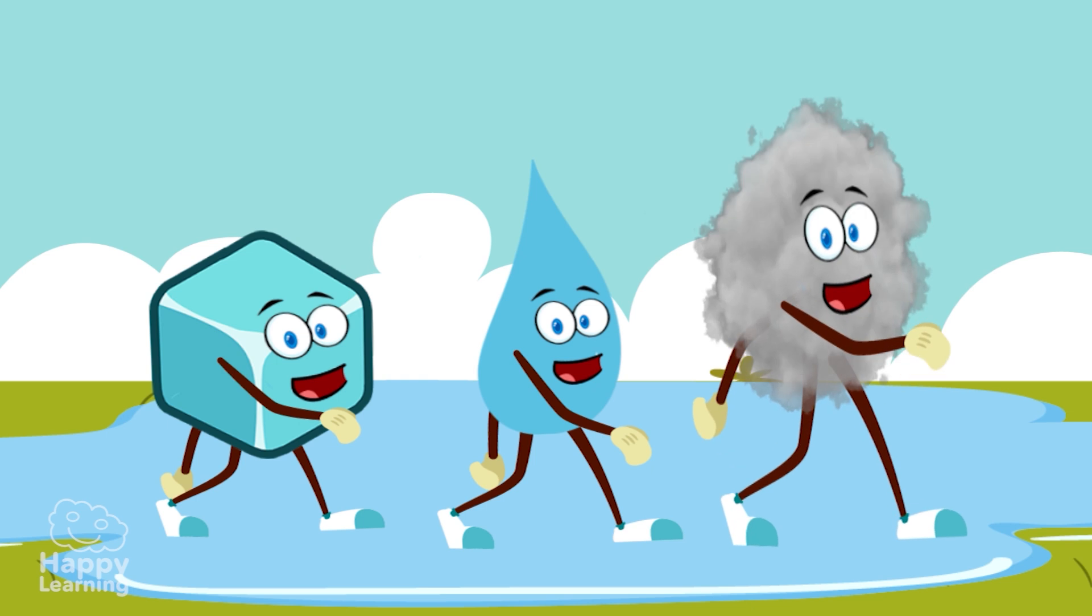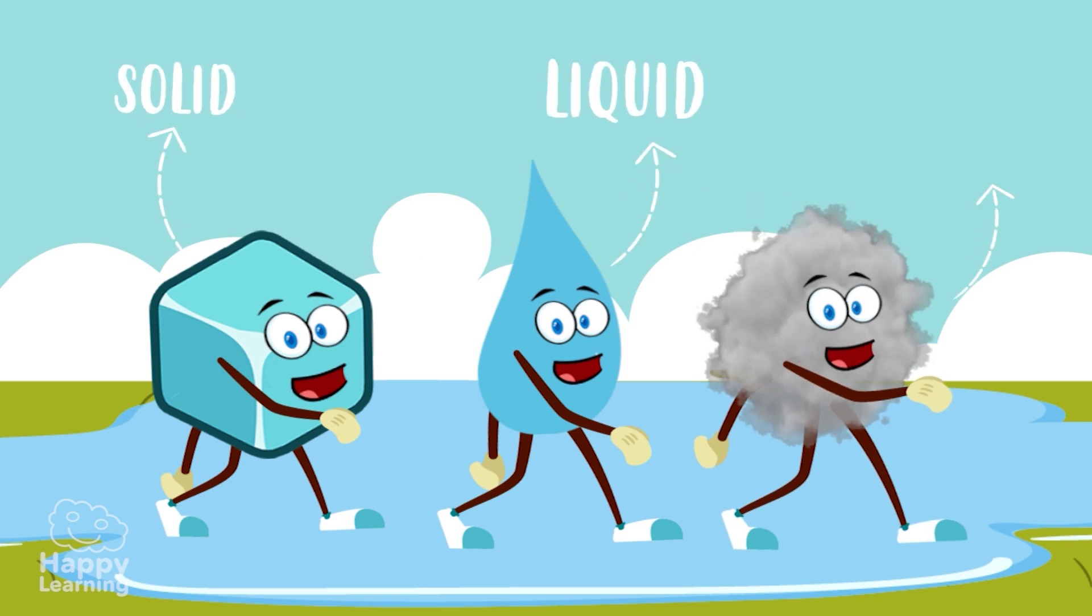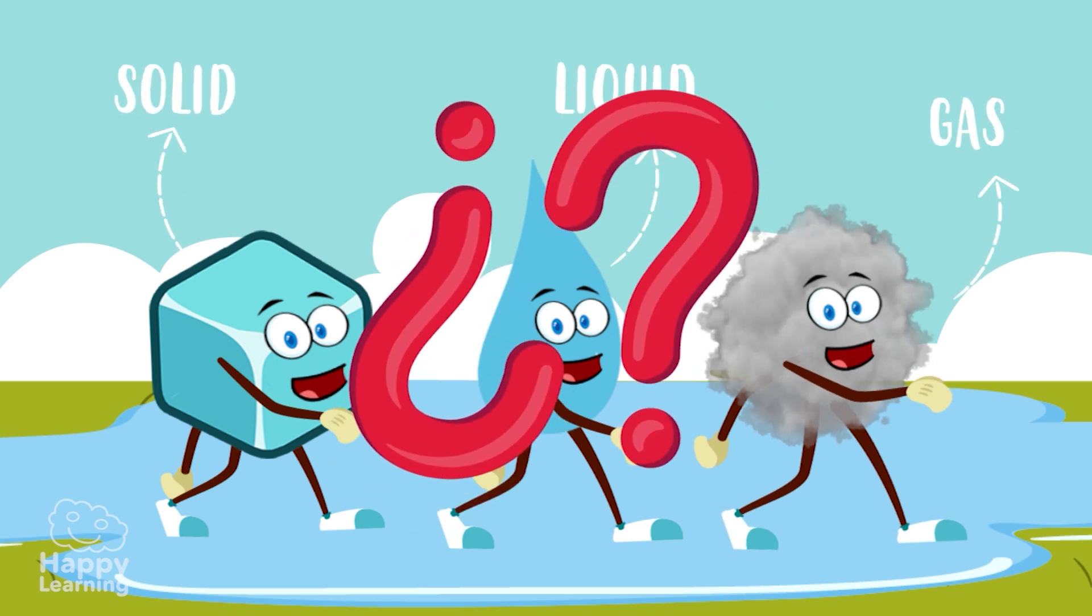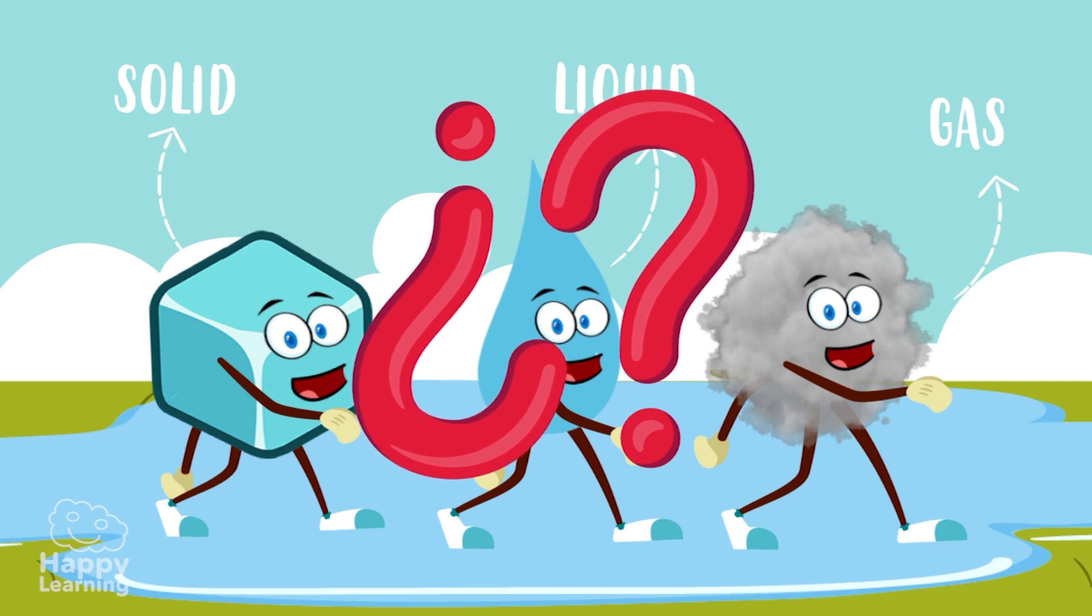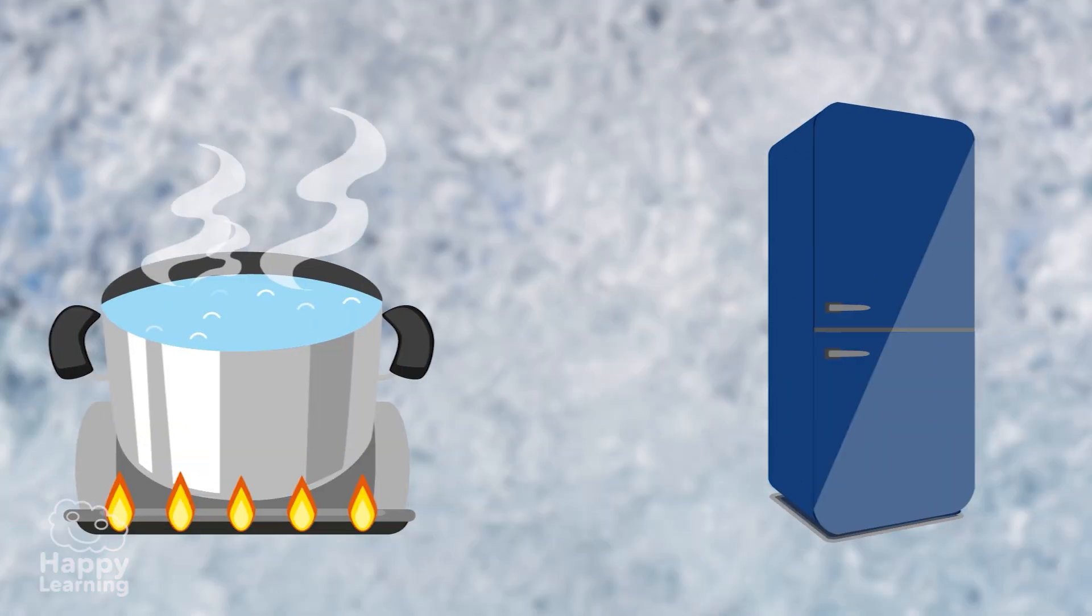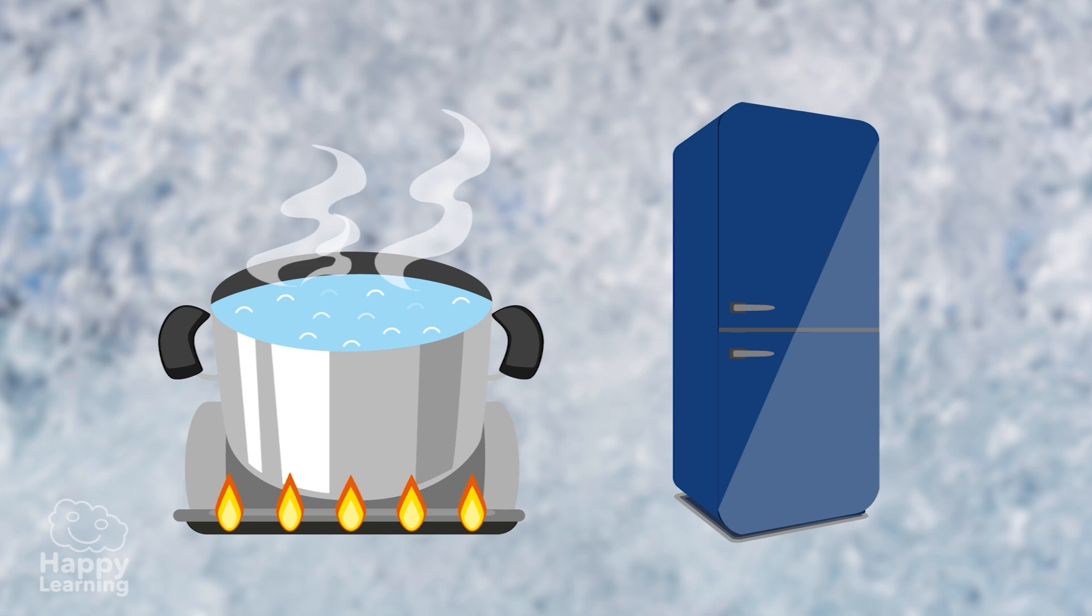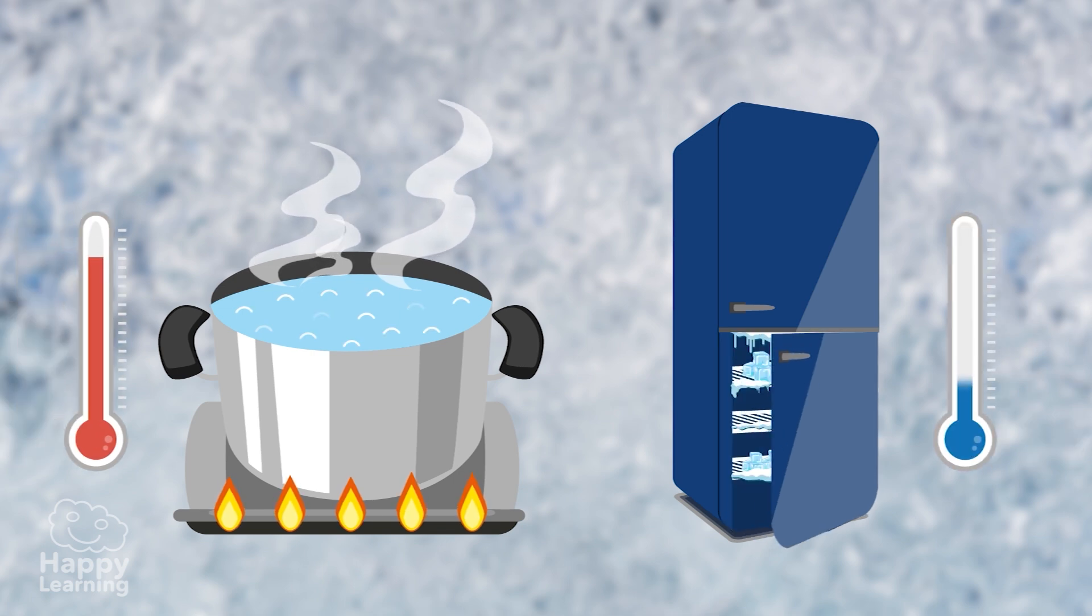Now we know about the three states of matter. But, do you know how we can change from one state to another? Changes in state happen after cooling or heating matter, and there are different types.